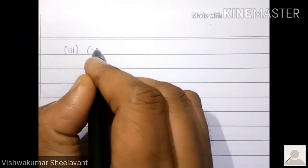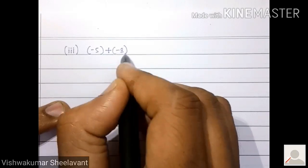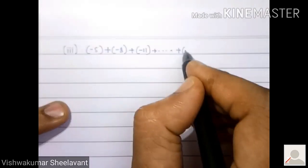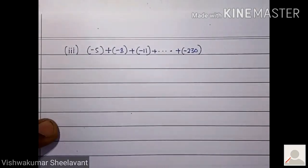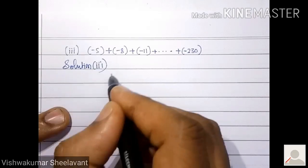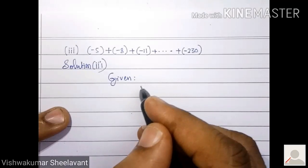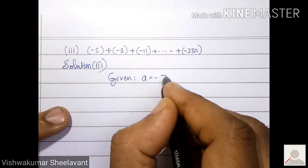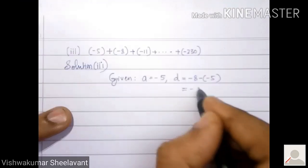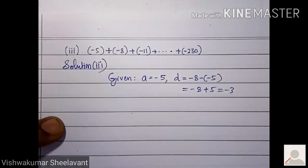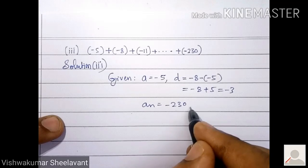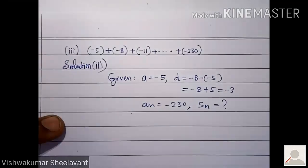The arithmetic progression is: -5, -8, -11, ... up to -230. Write all given information: a is equal to -5, d is equal to -8 minus (-5), which equals -3. The last term aₙ is equal to -230.